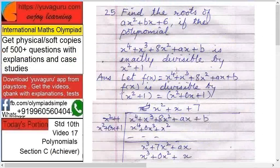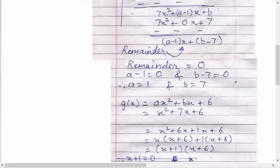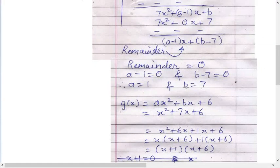So now we'll name this as g(x). So g(x) equals to ax square plus bx plus 6. Now a you know is 1 and b you know is 7, so equation is x square plus 7x plus 6. Now it's easy.